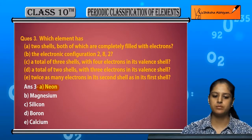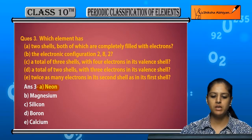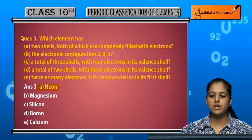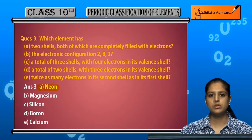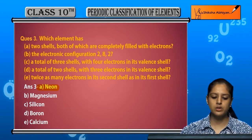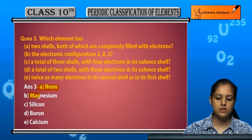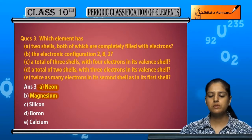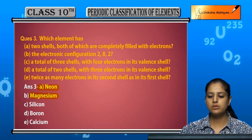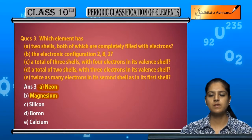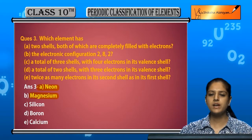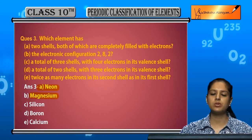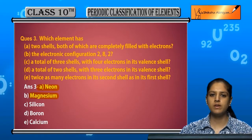The electronic configuration 2,8,2 belongs to Magnesium. Now, an element with a total of three shells and four electrons in its valence shell — since we are talking about four valence electrons, it will fall in the metalloid section.